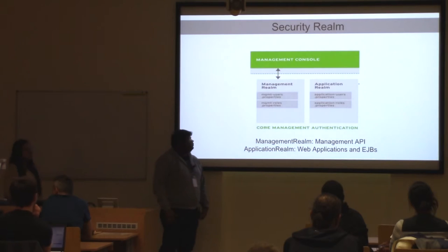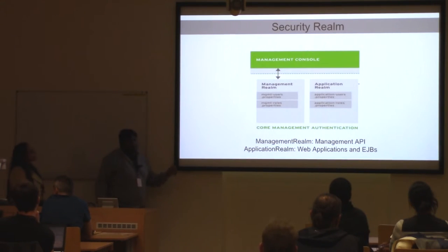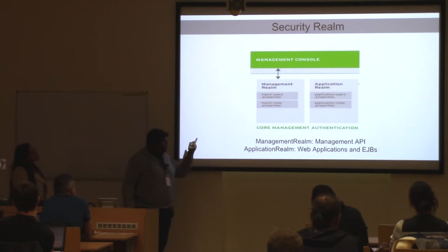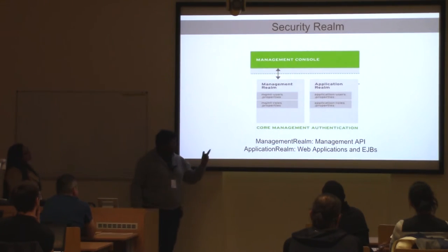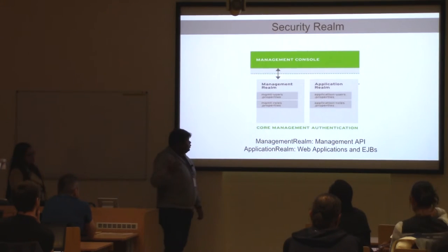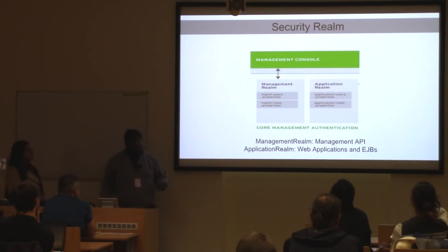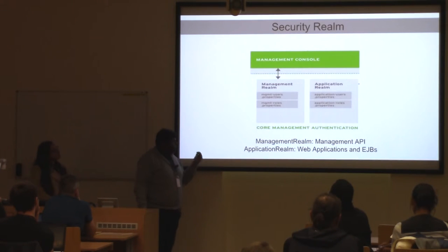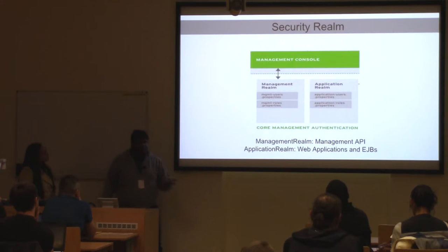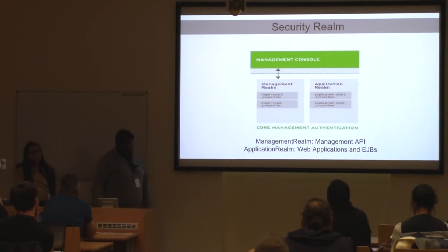To secure the application server, by default two security realms are provided: management and application. Both have the same functionality — they store your username and password. Usernames and passwords are stored in the management user properties and application user properties files. The management realm is for users who need to do configuration changes and deployments. The application realm is for end users connecting through a web application or EJB calls.